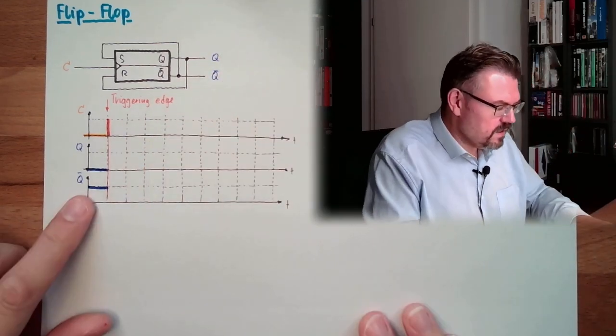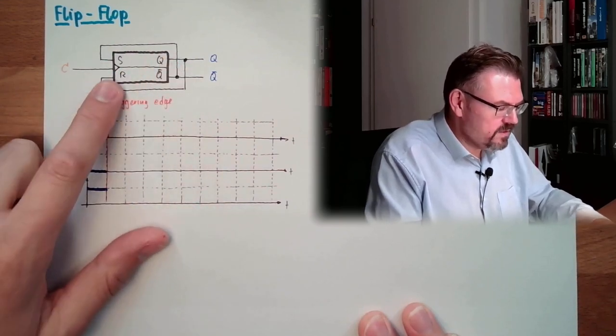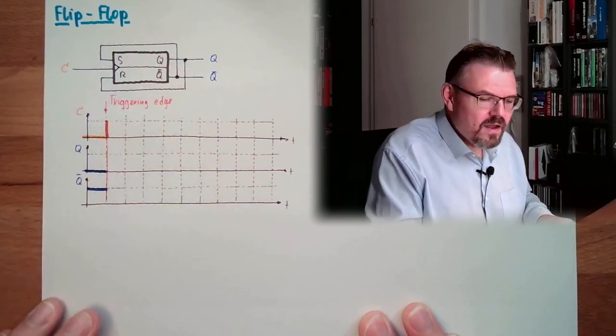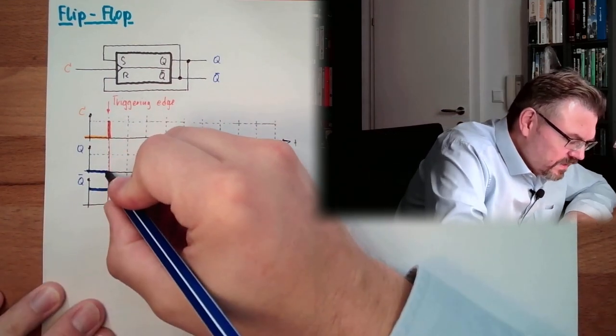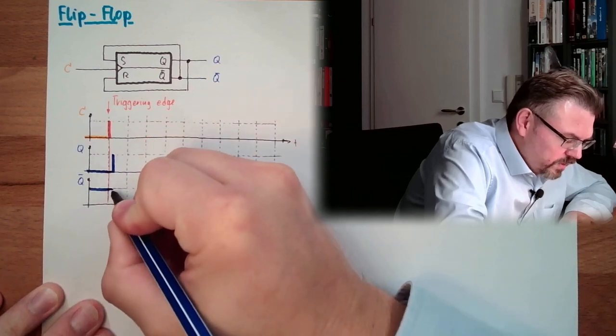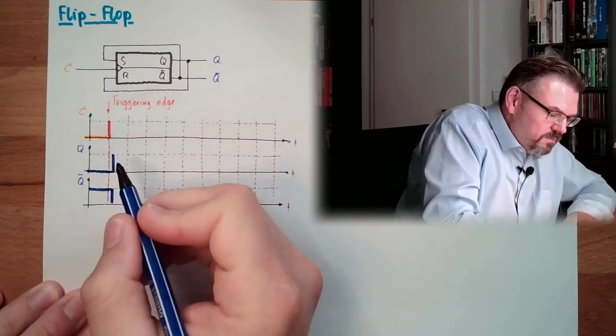Now, let's see, NOT Q is 1, so this means S is 1 and R is 0, so whenever I trigger, now it takes a while. So there is a latency time, so those two will change because the memory will be set.